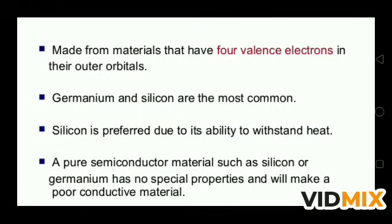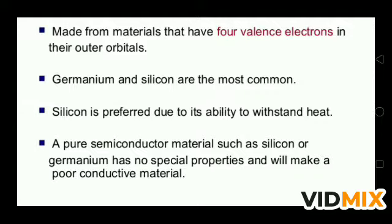Semiconducting materials are made from materials that have four valence electrons in their outer orbit. Germanium and silicon are the most common semiconducting elements — they have four electrons in their outer shell. Silicon is preferred due to its ability to withstand heat. A pure semiconductor material such as silicon or germanium has no special properties and will make a poor conductive material. You have to make a comparison table of conductors, insulators, and semiconductors based on electrical conductivity, resistivity, band structure, energy gap, and current carriers.